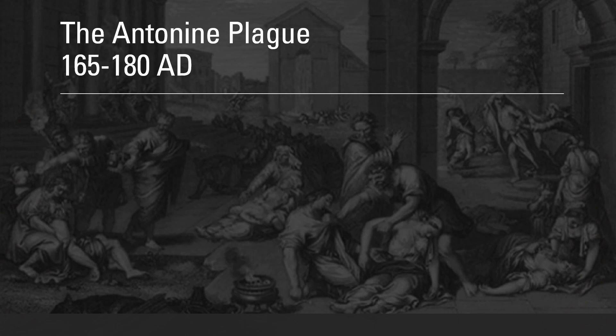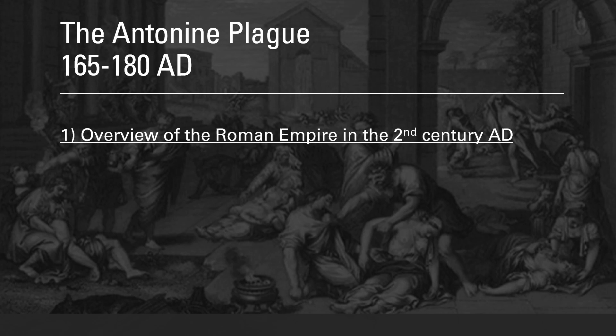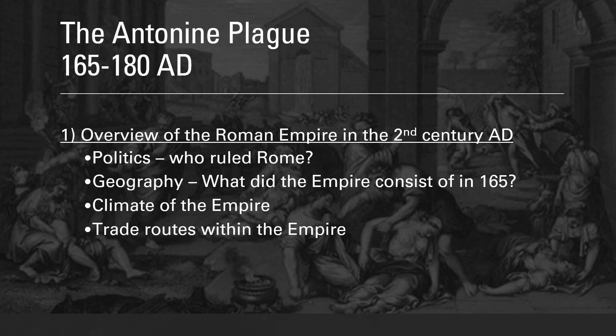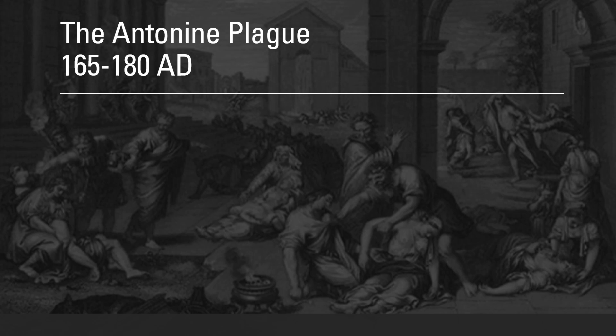To begin with, I'm going to do an overview of the empire in the second century: politically, who was ruling and the effect that may have had; the geography — what did Rome consist of at the outbreak of the plague; and the climate — how was it, and what effect may that have had in terms of the spread of the plague? We'll also look at trade routes within the empire, because like the climate, this may well have contributed to the fast spread of the plague after its initial outbreak.